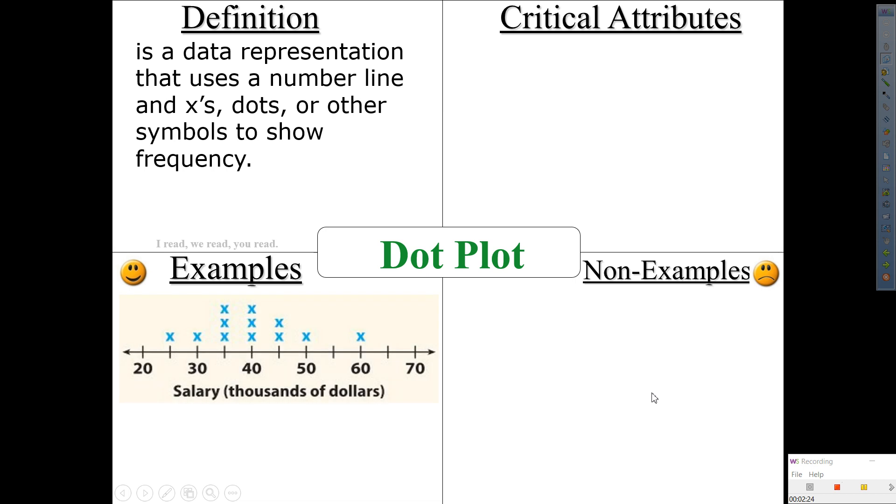Example. Here's a number line that is representing what? Salary in thousands of dollars. And what did they use to represent the data or the frequency? They used x's. What else can we use instead of x's? Dots, that's why they call it dot plot. What else can we use? Pokemon. Yes. Stars. Yes. Check marks. Yes. A happy face for all those, for each of those frequencies. Yes. But once again, according to the definition, it's using a what? A number line. Do you see a number line? Yes. Do you see x's, dots, or other symbols to show frequency? Yes. Fairly simple, straightforward. Yes.